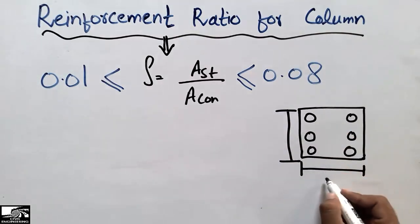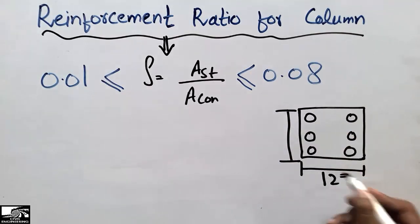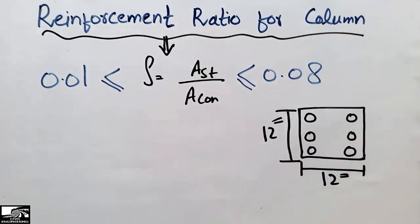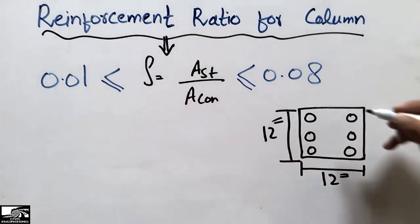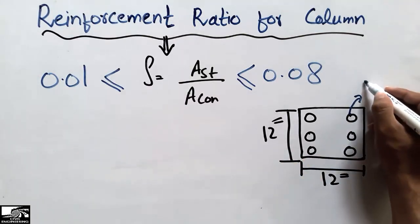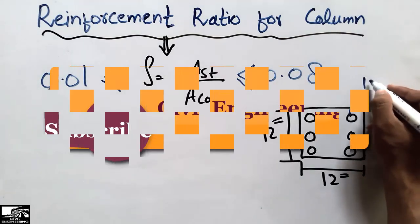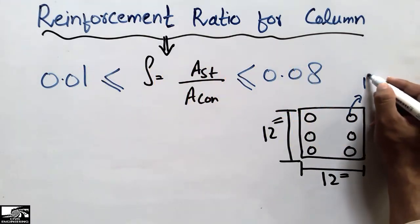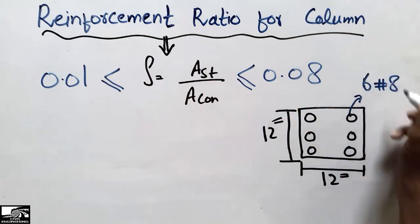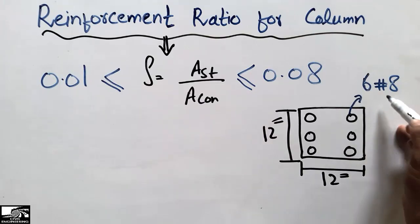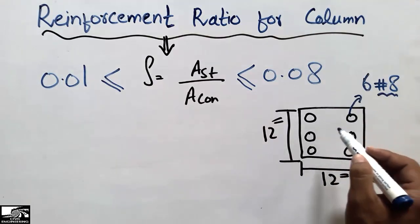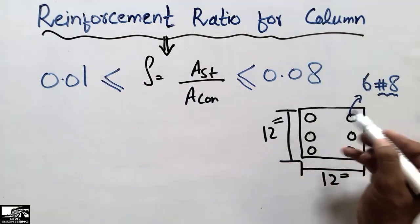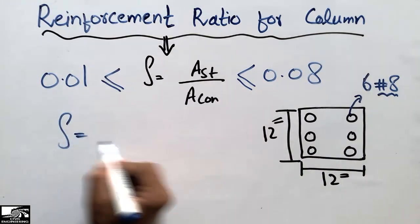The dimensions of the column section are 12 inches by 12 inches. These are six bars — one, two, three, four, five, six — these are six number eight bars. After designing, we know that number eight bars are used in this column.